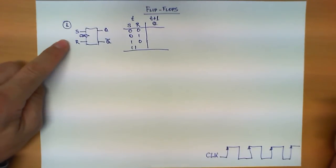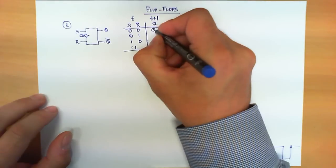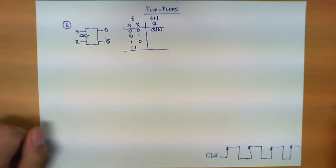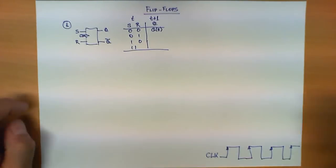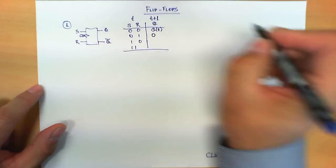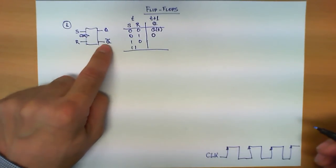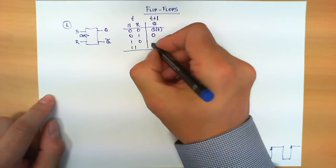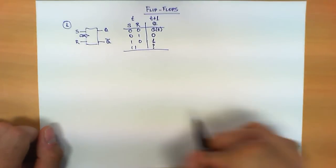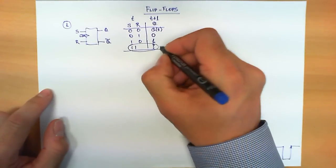When S and R are both 0 and the clock makes a rising edge transition, Q will remain exactly the value it had before — the output maintains its value. When S and R are 0-1 and a clock transition comes, the output becomes 0. The 1-0 combination will make Q at t plus 1 become 1. This flip-flop has an important property: when both inputs are 1, the output at the next time cannot be predicted, so this case should be avoided.